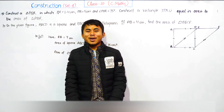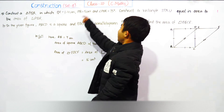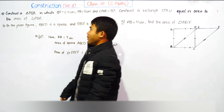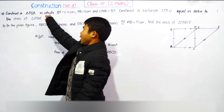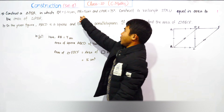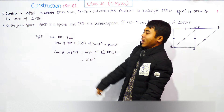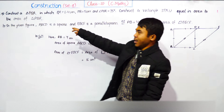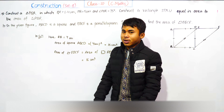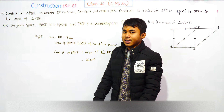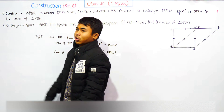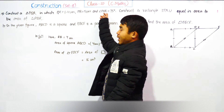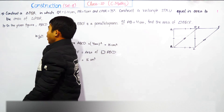Namaskar! Welcome to Nepal Online School. Today we have Class 10 Compulsory Math, Set 8, Construction chapter question. We need to construct triangle PQR in which QR is equal to 6.4 cm, PQ is equal to 5 cm, and angle PQR is equal to 75 degrees. Also construct rectangle STRU equal in area to the area of triangle PQR. First we need to construct triangle PQR, then we need to construct a rectangle whose area is equal to this triangle.